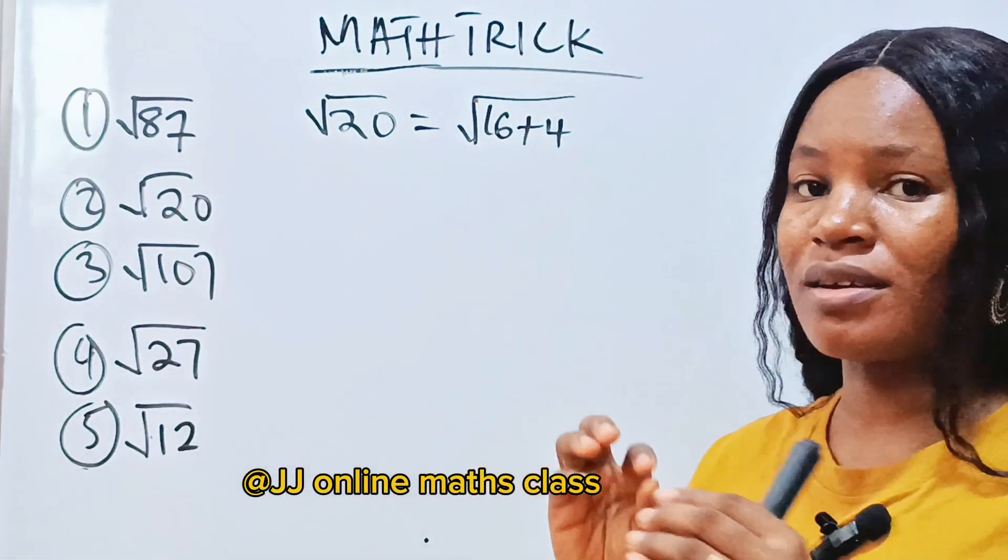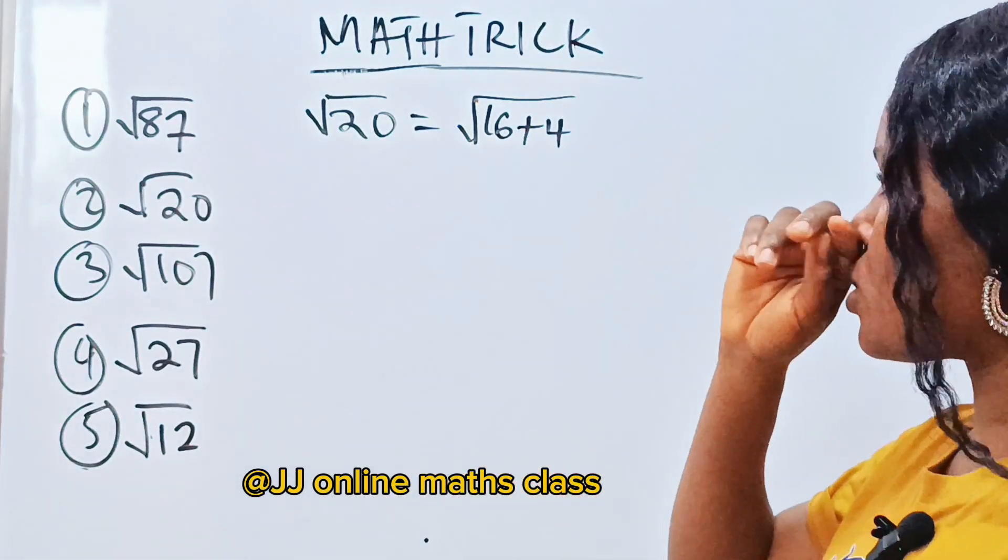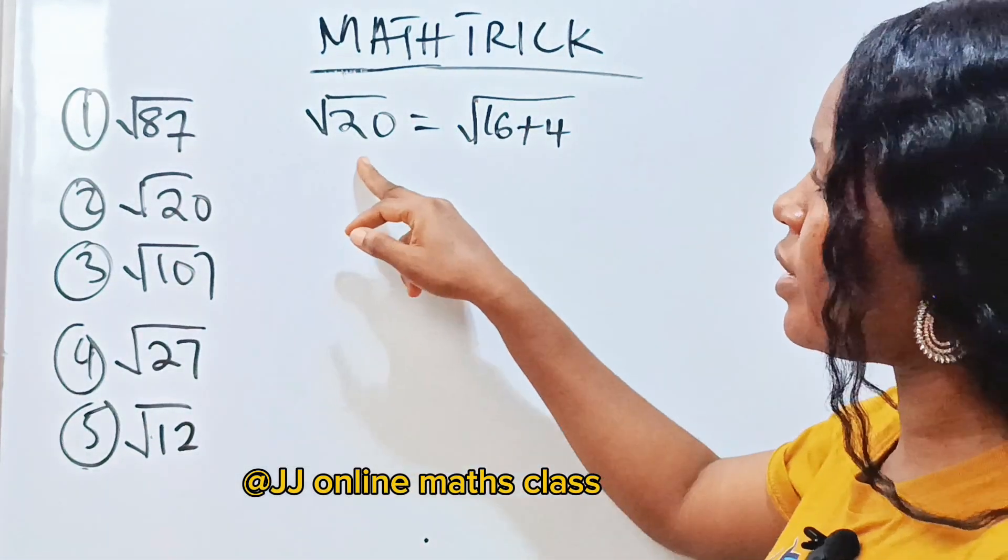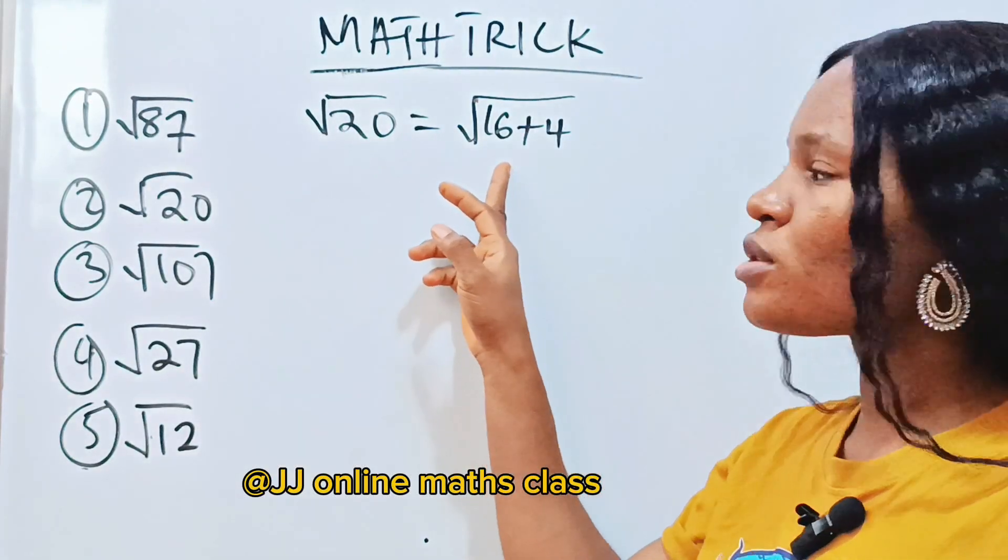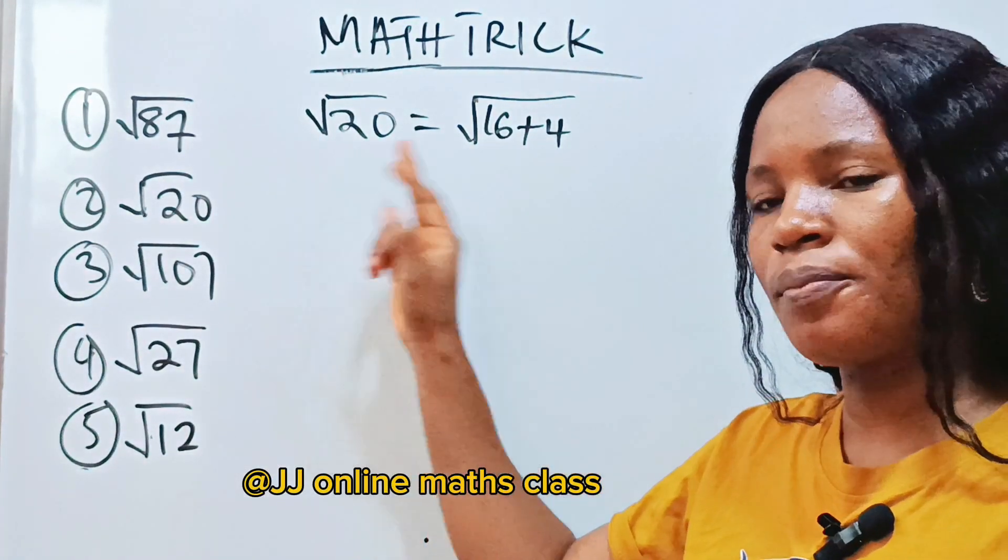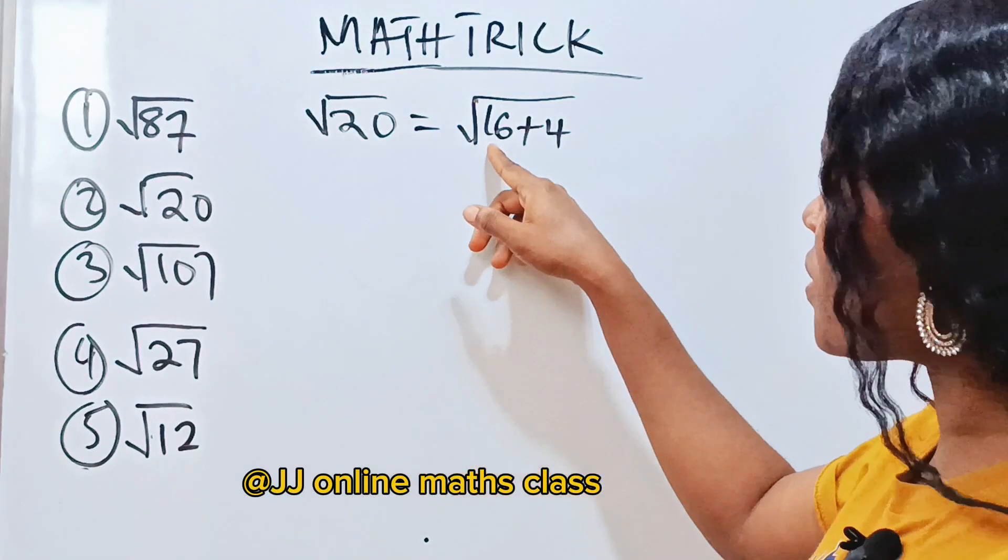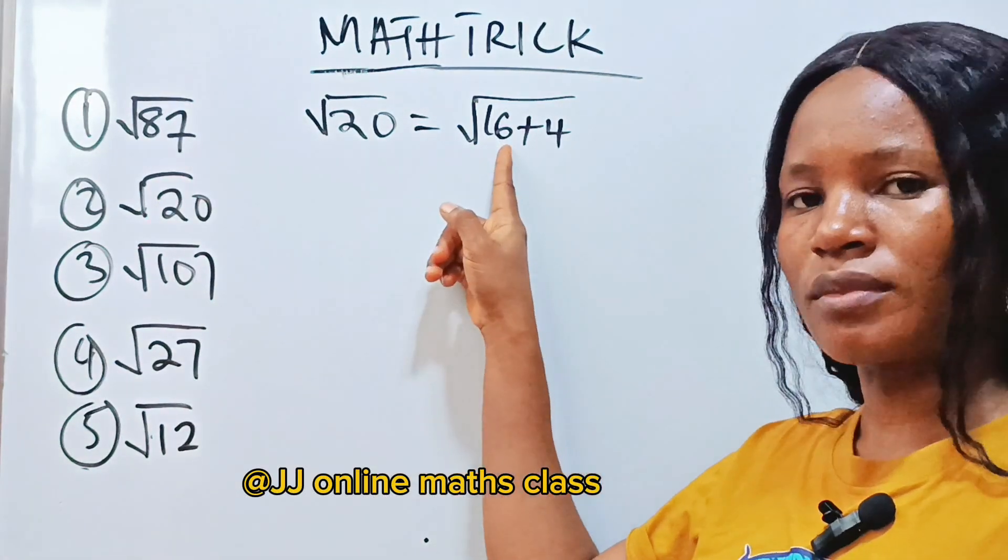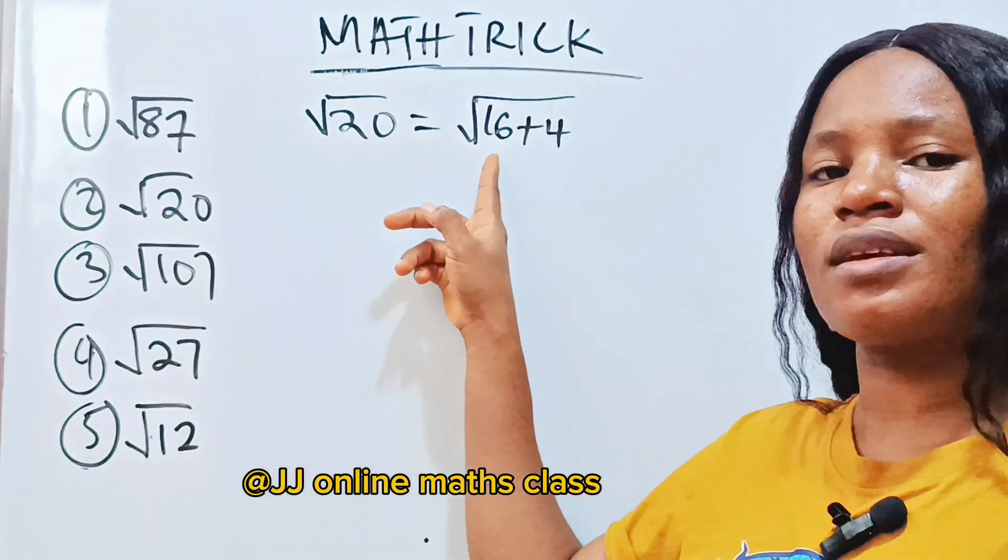You should know your perfect squares and their square roots. The perfect square closest to 20 is 16. So we can say 16 plus 4 will give us 20. So we are going to find out what is square root of 16. Square root of 16 is 4.